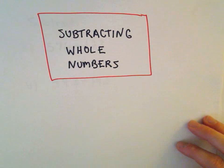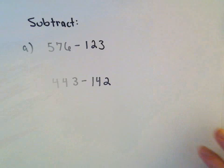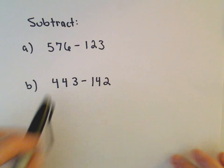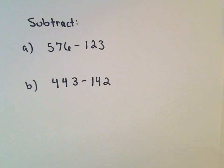Alright, in this video we're going to look at an example of subtracting whole numbers. So in part A here we're going to take 576 minus 123, and then in part B we're going to do 443 minus 142.